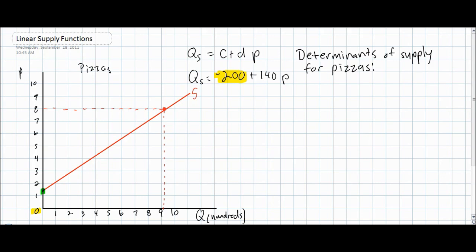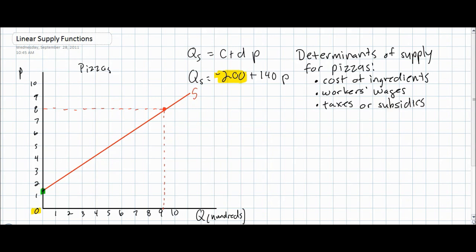Things that can cause the supply for pizzas to change include the cost of ingredients, wages for workers in the pizza shop, taxes or subsidies from government towards pizza producers, expectations about future pizza prices, and changes in the technology used for producing pizzas.